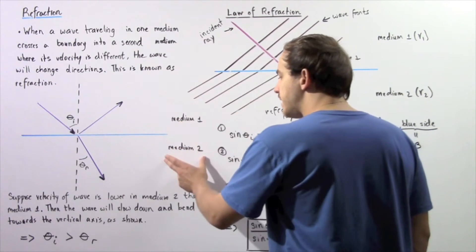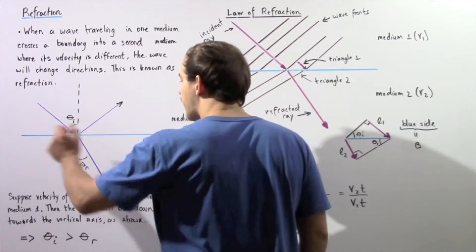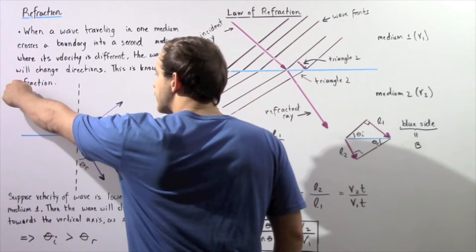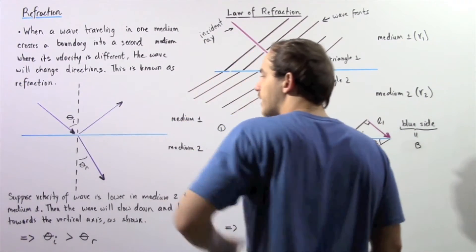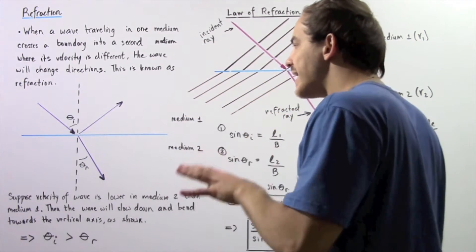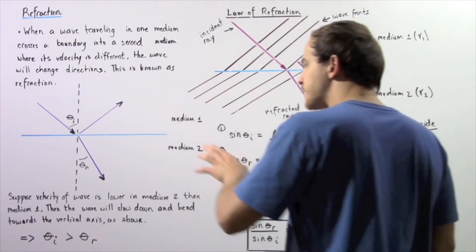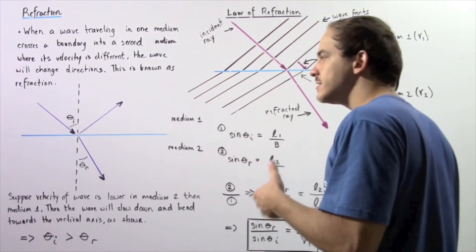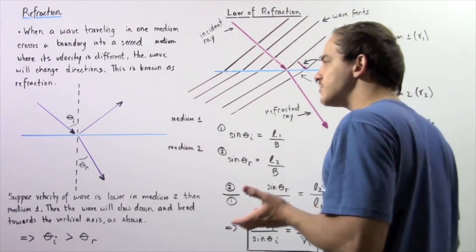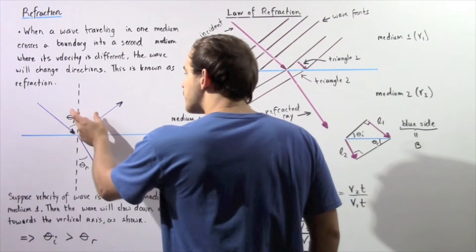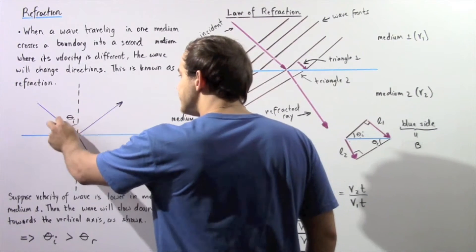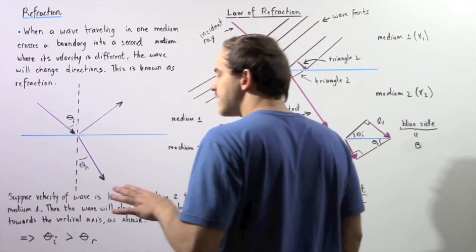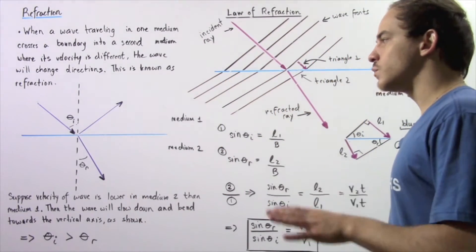Let's suppose we have medium one and medium two separated by a blue line, and our ray begins at a location and travels in a given direction. Right at the moment the ray hits the surface between medium one and medium two, some of that wave will reflect — this is known as reflection of light. The angle of incidence that the incident ray makes with our reflected ray are exactly the same, and that's known as the law of reflection.